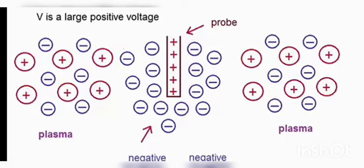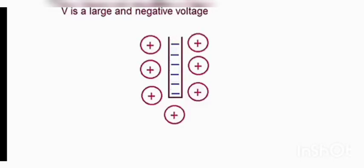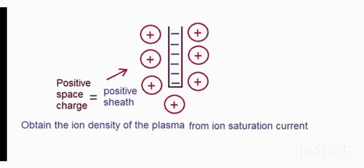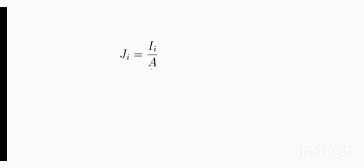Now look at the ion saturation region where we place the probe deep in the plasma and apply a large negative potential. Naturally, the ions are attracted to it and form a positive space charge region, which is also a positive sheath. Now let us obtain the ion density of the plasma from the ion saturation current.